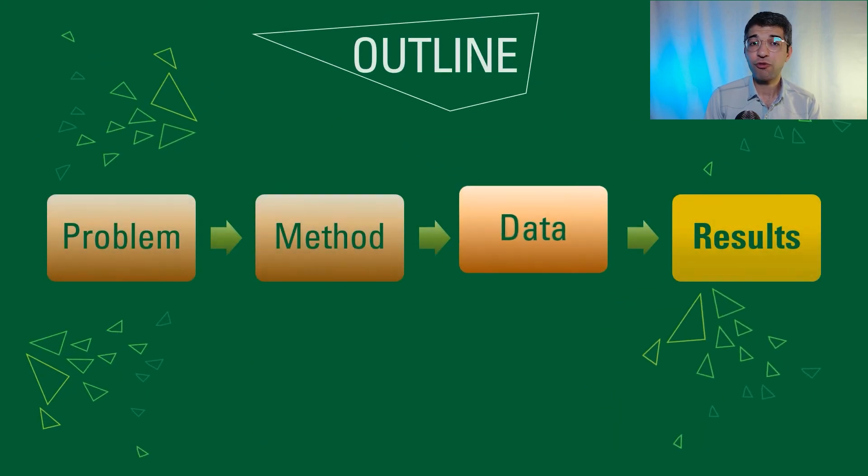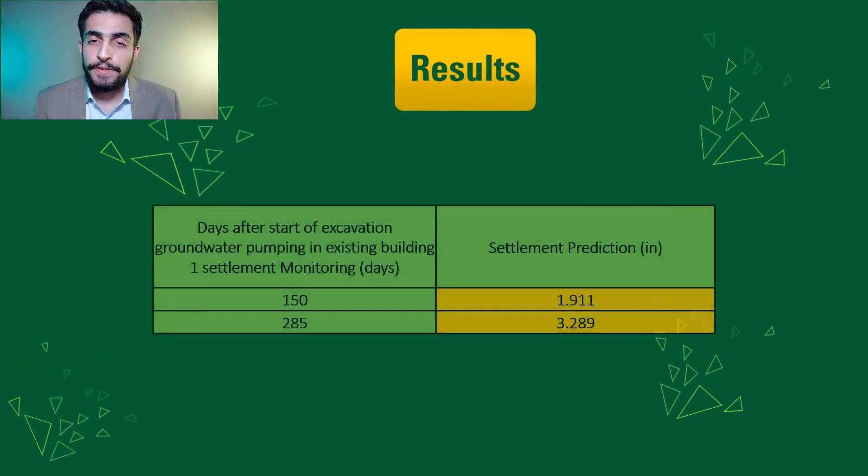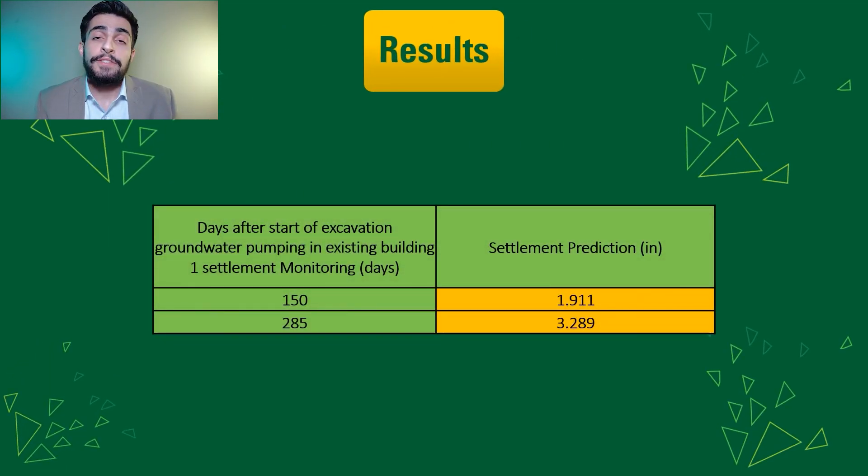These are done for calculating our final result. Our final results for the prediction is that after 150 days of dewatering, the measurement location will settle 1.911 inches. And after 285 days of dewatering, the measurement location will settle 3.289 inches.